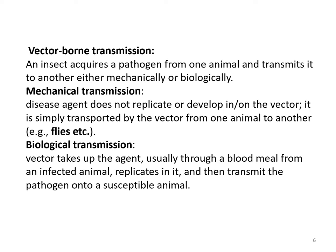Before going into detail about microorganism transmission, it is important to understand three terminologies: vector-bound transmission, mechanical transmission, and biological transmission. In vector-bound transmission, an insect takes a pathogen from one animal and transmits it to another host, human, or animal — either mechanically or biologically. In mechanical transmission, the disease agent does not replicate or develop inside the vector but is simply transported by the vector, for example by flies landing on infected organisms then moving to healthy ones.